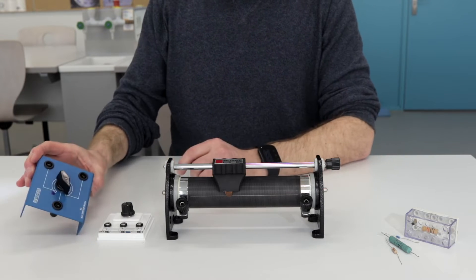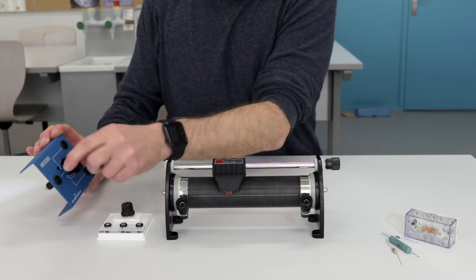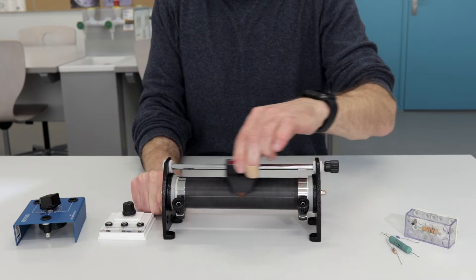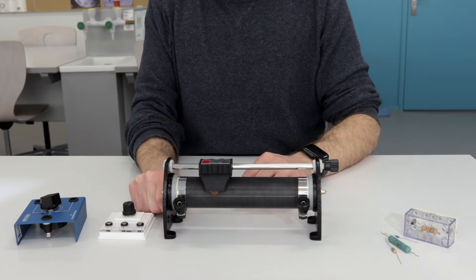They can come in different shapes and forms, so they can be circular like this one, you can turn them, or like this one, or linear in which you move a wiper.